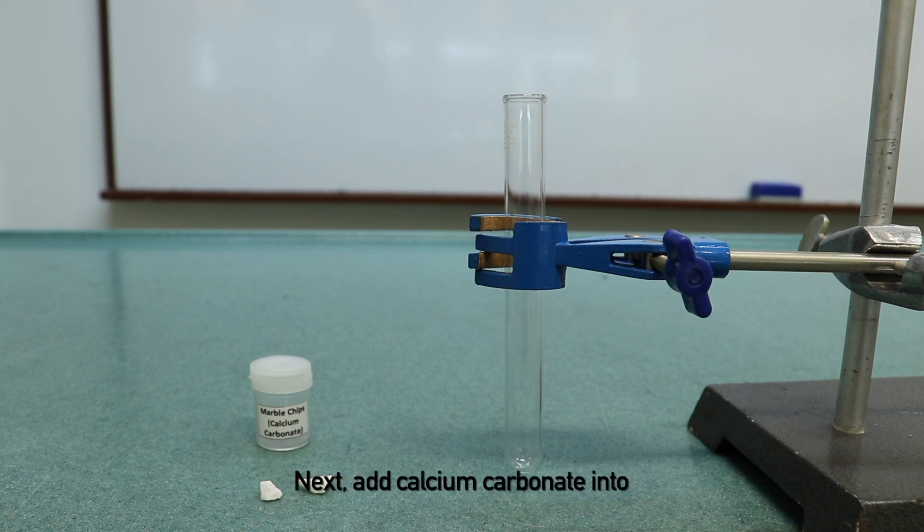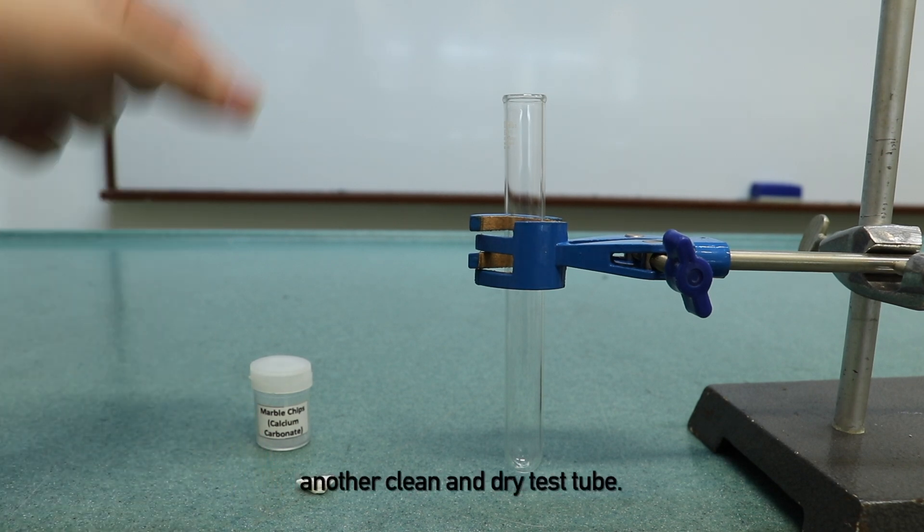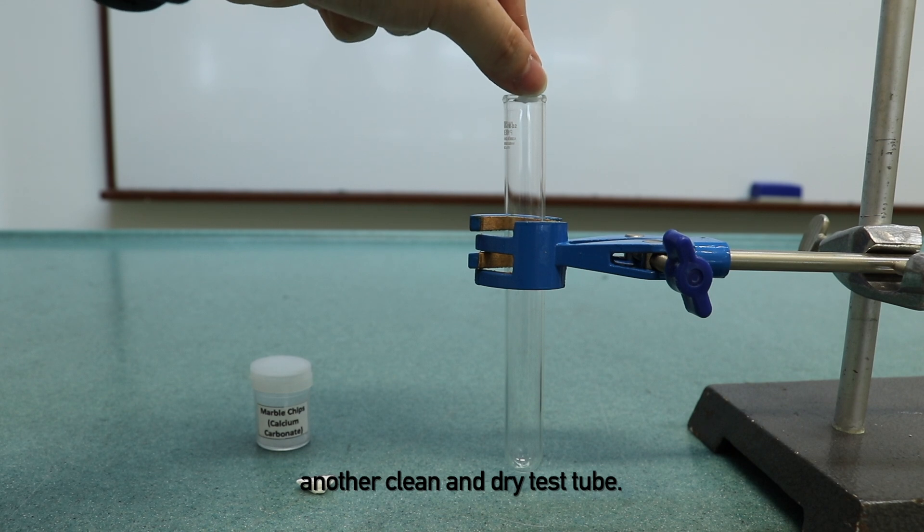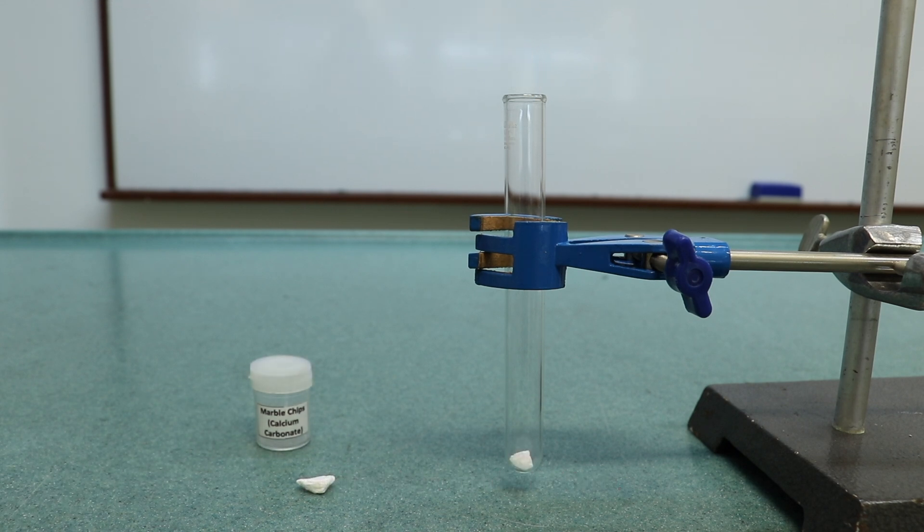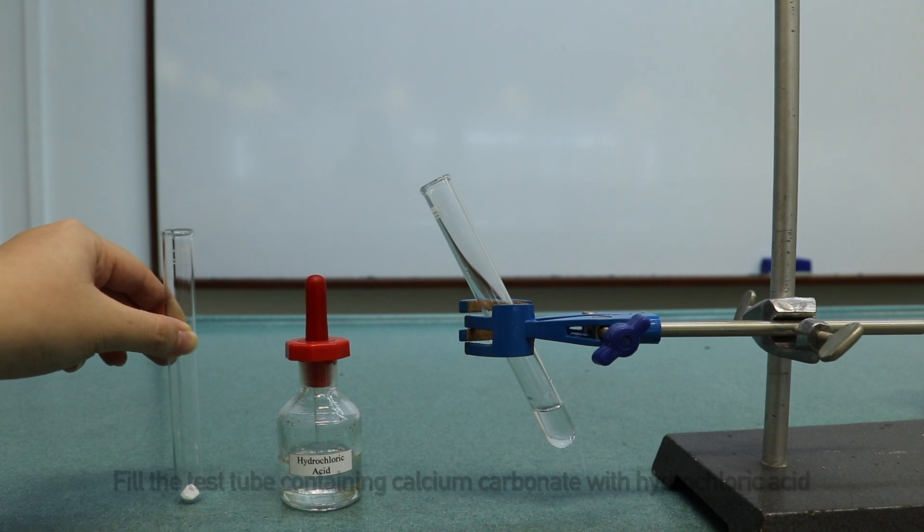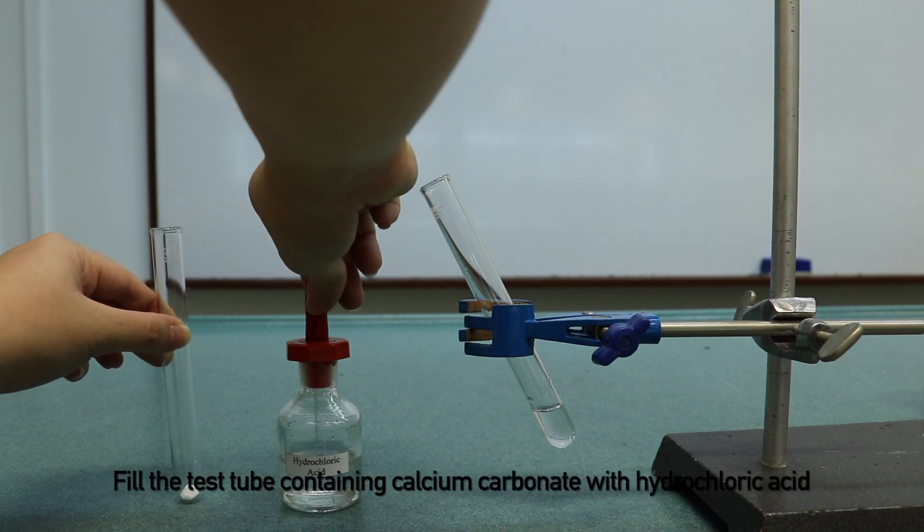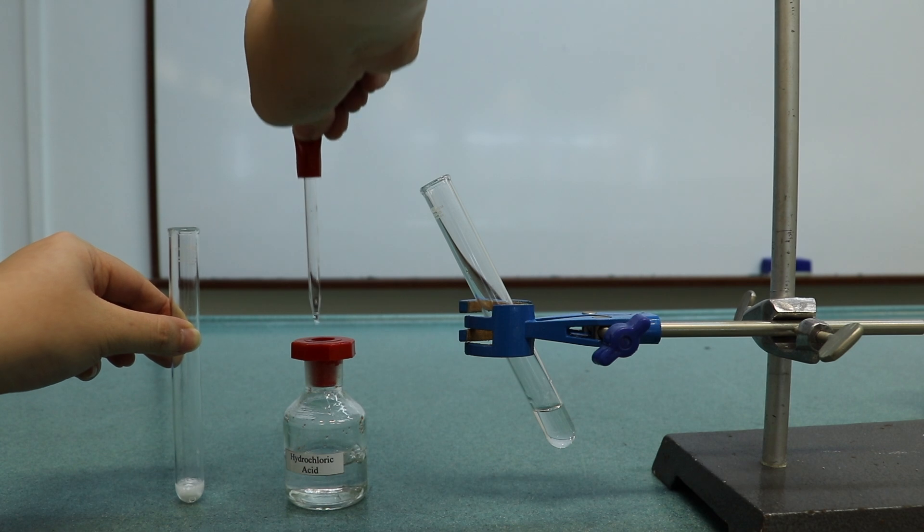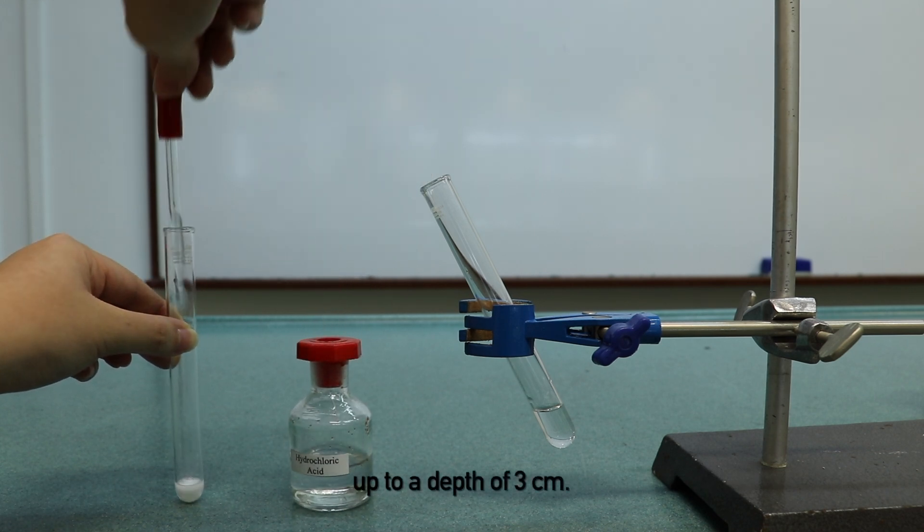Next, add calcium carbonate into another clean and dry test tube. Fill the test tube containing calcium carbonate with hydrochloric acid up to a depth of 3 cm.